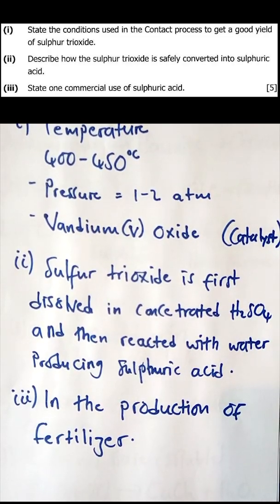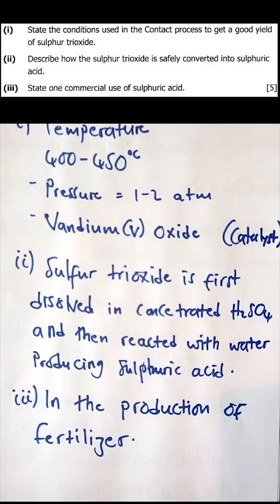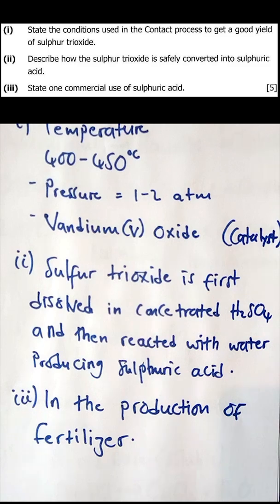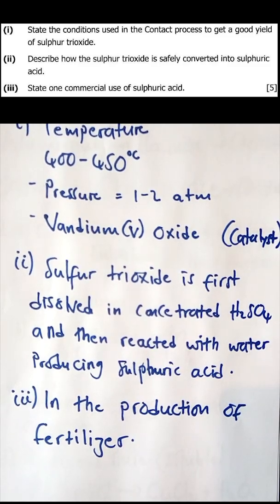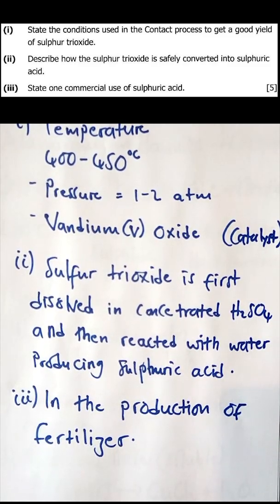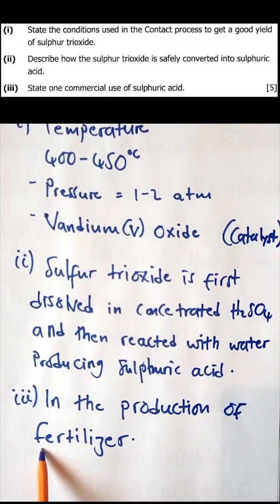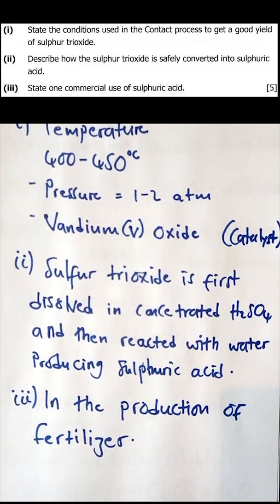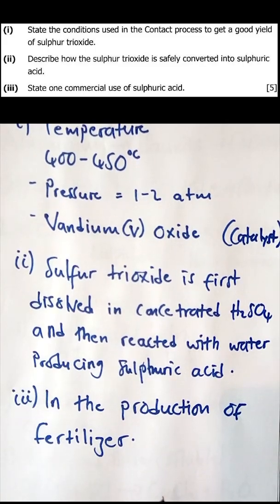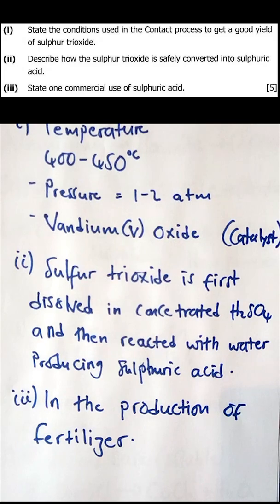The last part of question 11: state one commercial use of sulfuric acid. Sulfuric acid has many uses, but one major commercial use globally is in the production of fertilizers — specifically NPK fertilizers containing nitrogen, potassium, and phosphorus. Sulfuric acid is heavily utilized in producing those fertilizers.